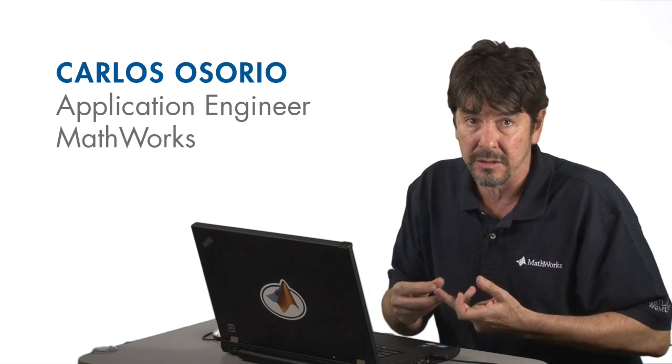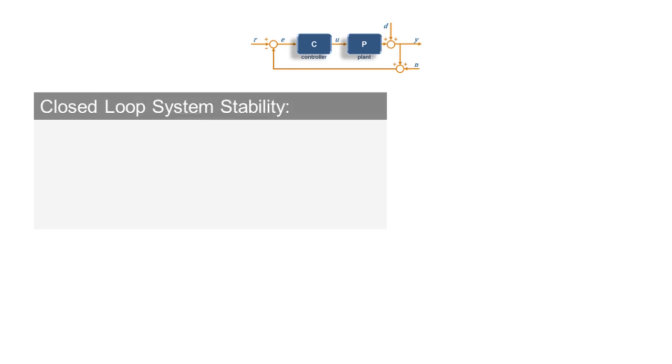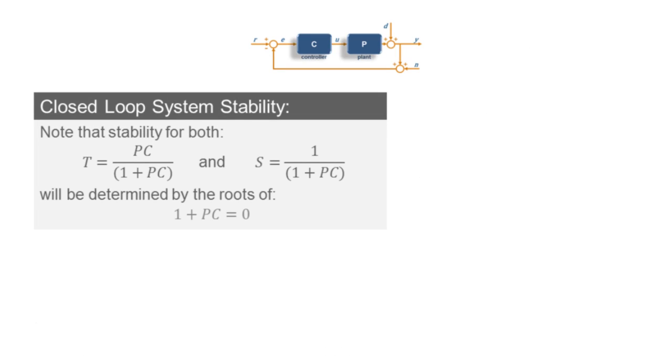In general, for any feedback control architecture, all the relevant closed-loop transfer functions will have the same characteristic polynomial in the denominator, and the stability of the system will be determined by the roots of that polynomial. In our case, that characteristic polynomial is 1 plus PC.